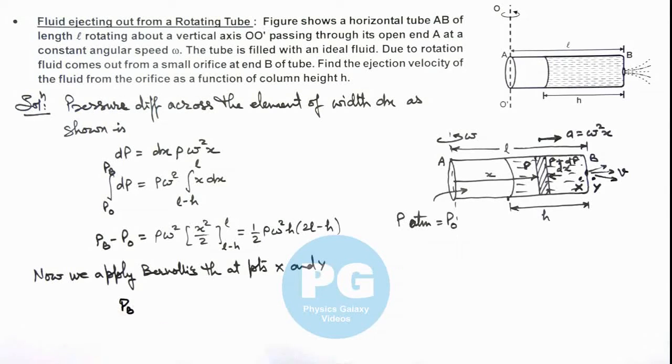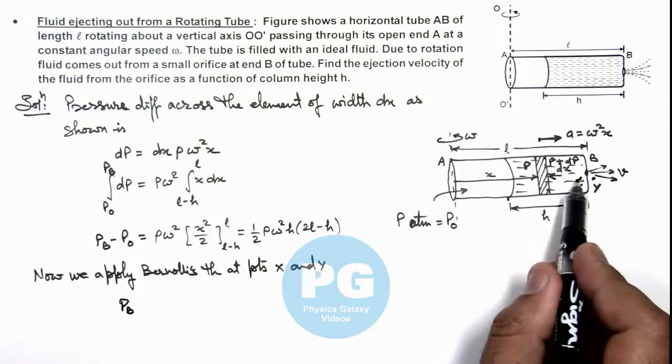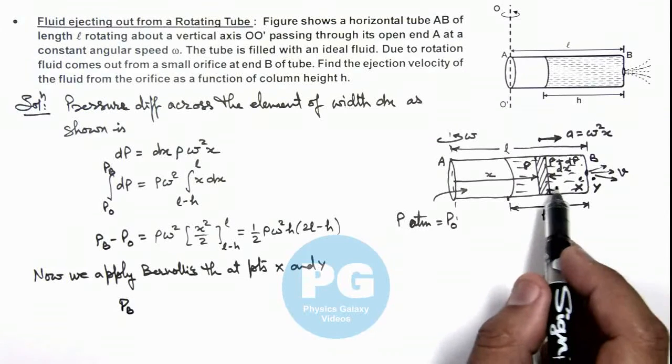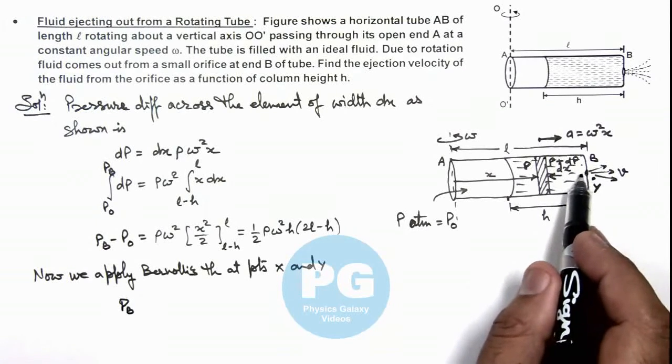And we can neglect the velocity of fluid at X because the area of tube is very large compared to the area of orifice which is given to be small.